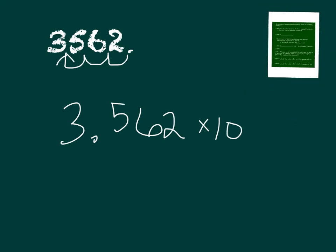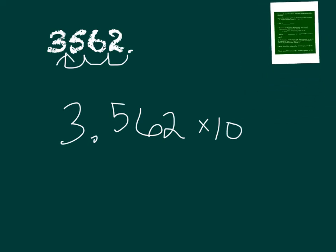And so we rewrite our number with a decimal now between the 3 and the 5. And then our power of 10 is going to be to the third. It's as simple as that.